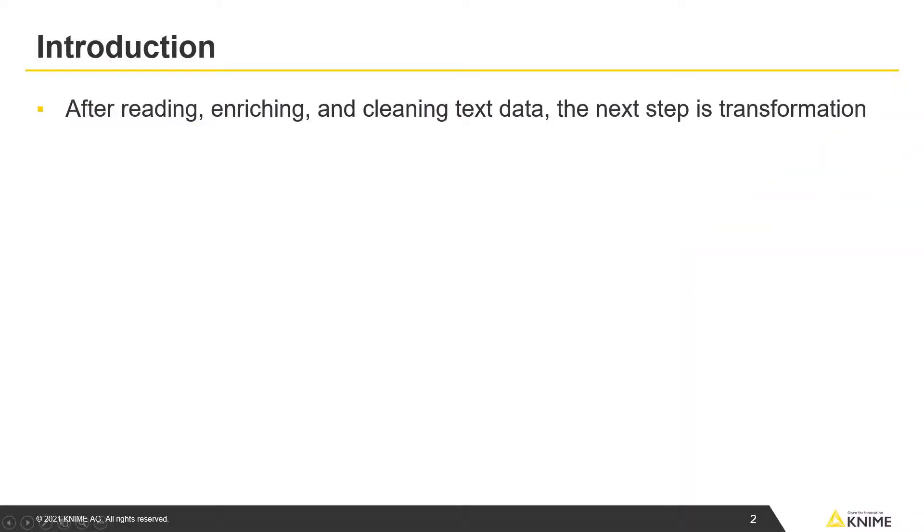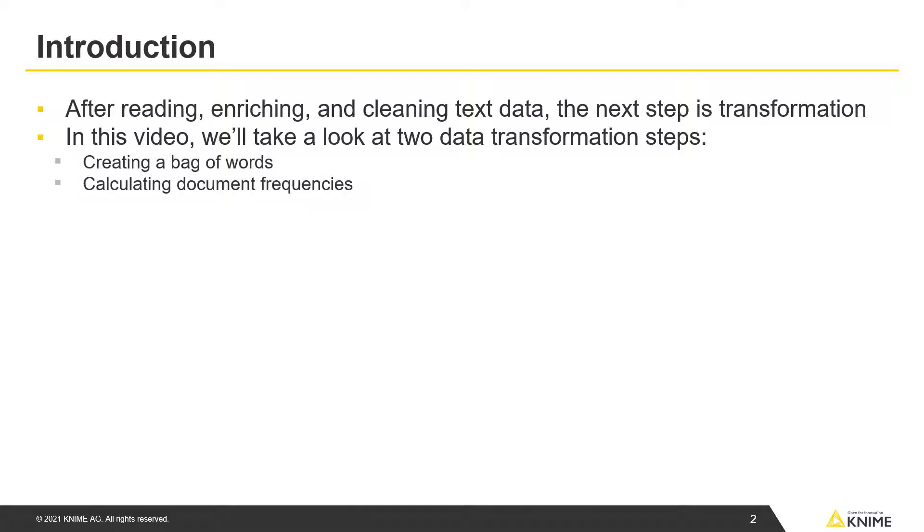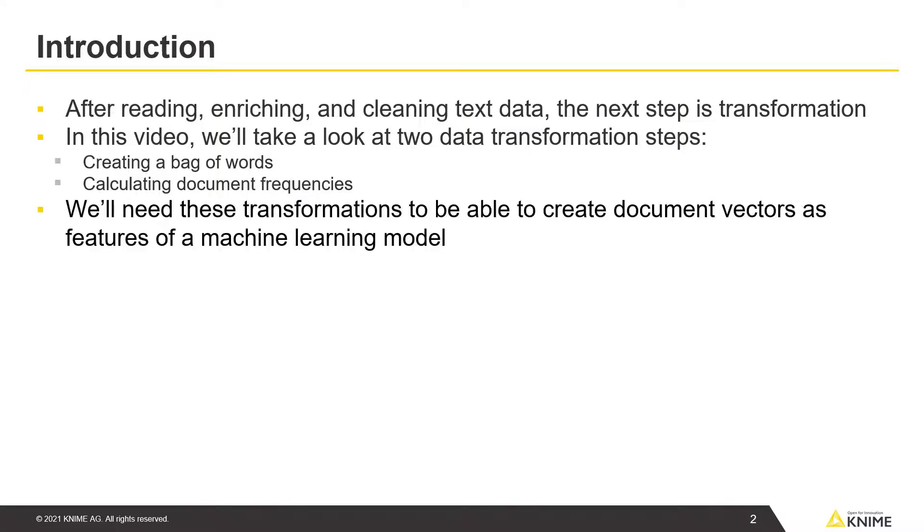After reading, enriching, and cleaning text data, the next step is transformation. In this video, we'll take a look at two data transformation steps: creating a bag of words and calculating document frequencies. We'll need these transformations to be able to create document vectors as features of a machine learning model.